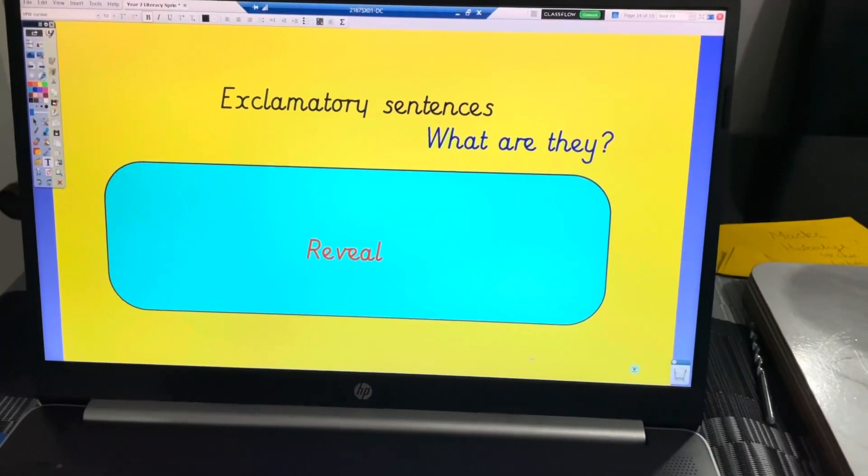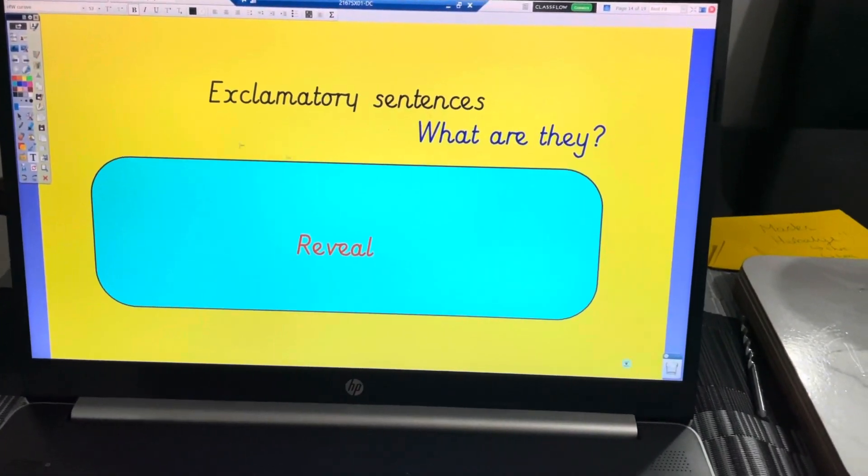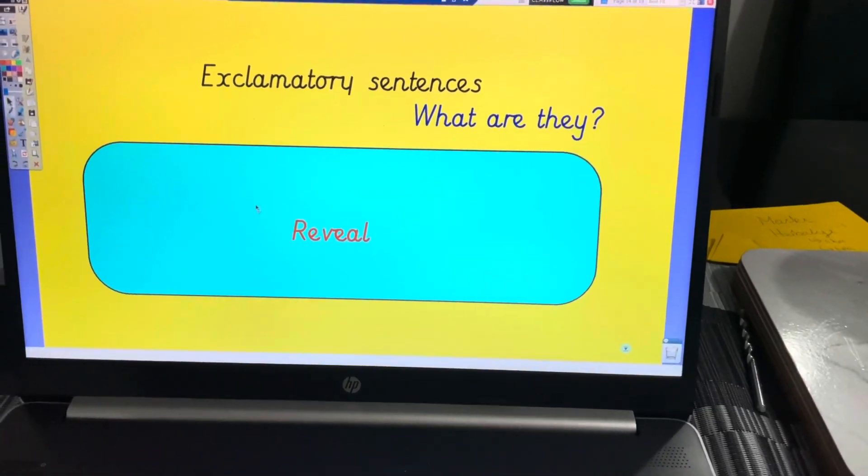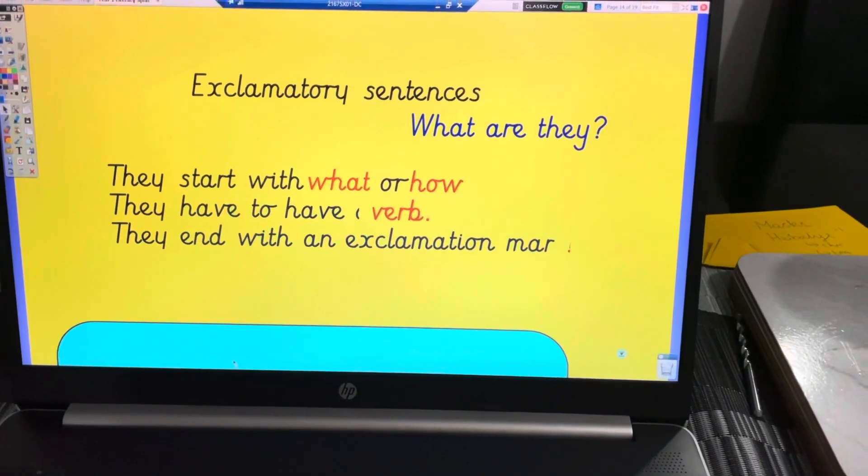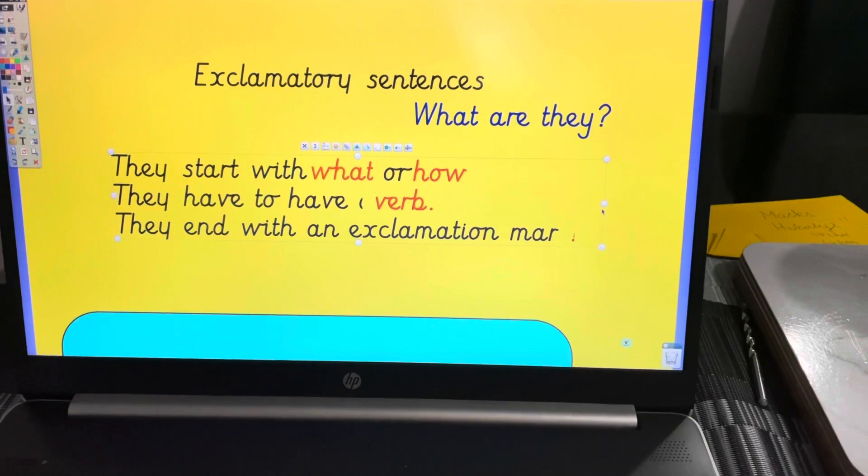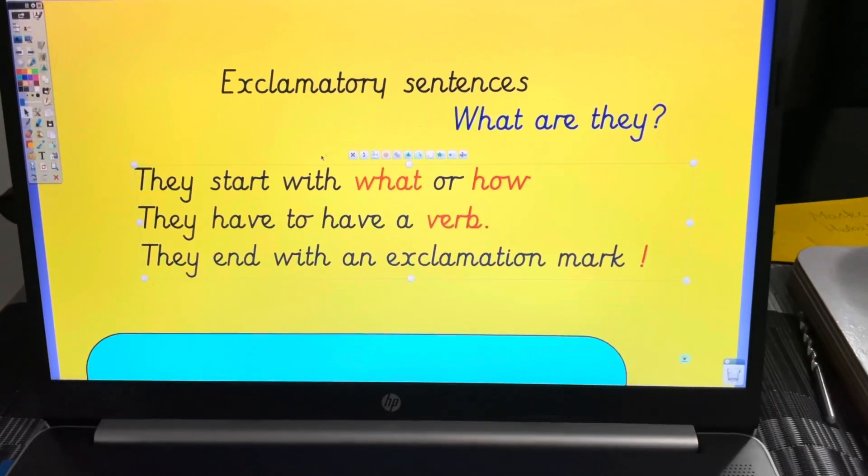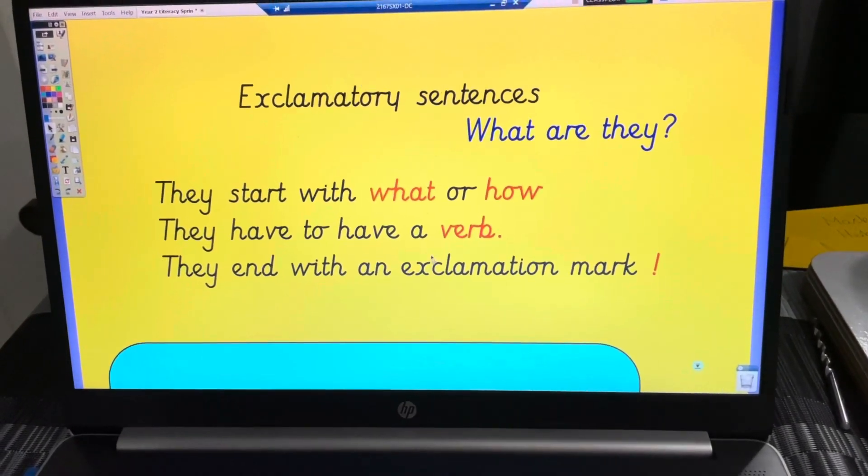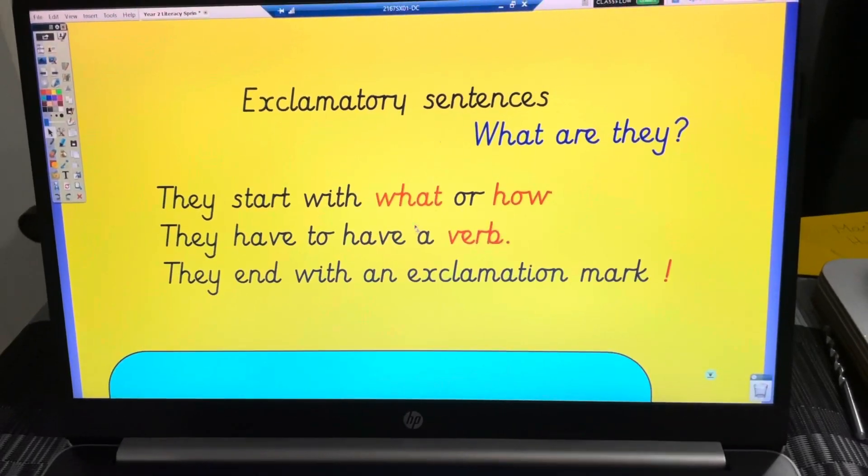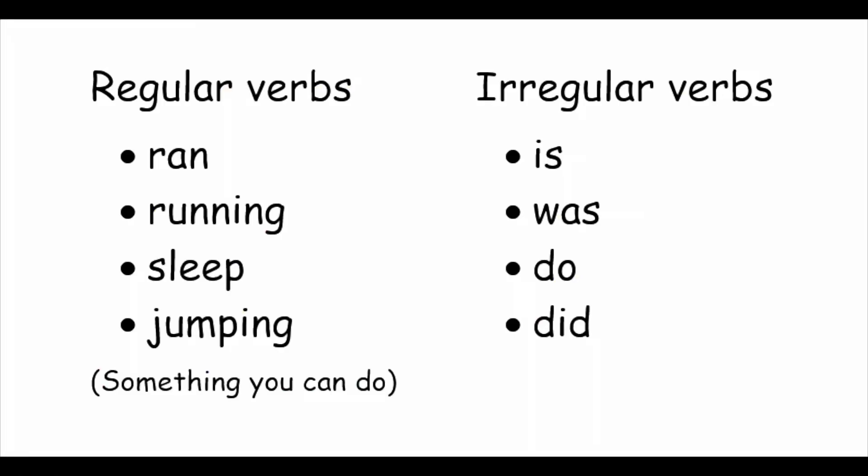Exclamatory sentences - what are they? They are sentences that start with 'what' or 'how'. They have to have a verb in them, and like Miss Warren said in the other video, a regular verb usually. And they end with an exclamation mark.